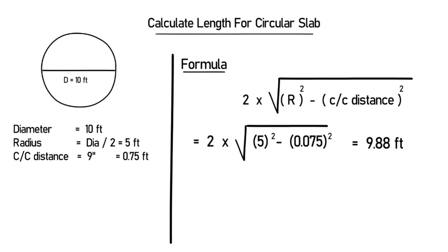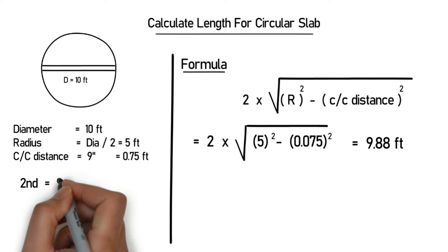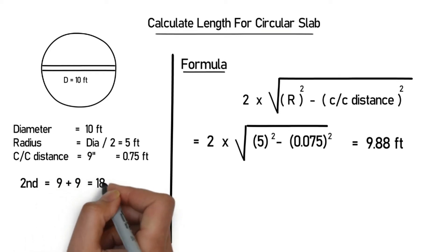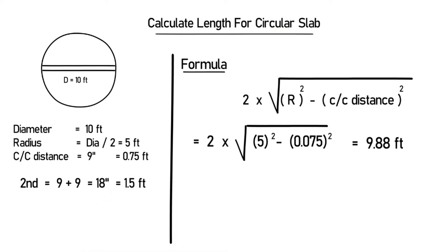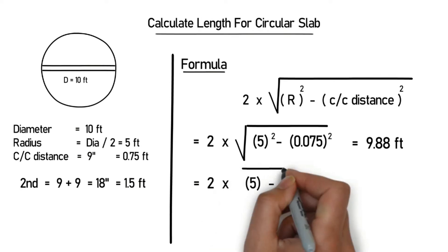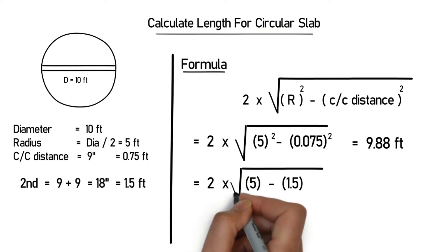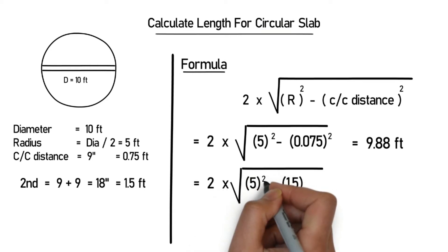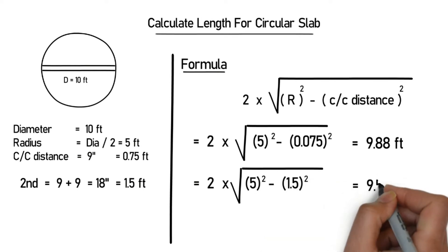For the second bar, we first find the center to center distance, which is 9 + 9 = 18 inches. Converting to feet gives 1.5 feet. Putting the second center to center distance into the same formula: 2 × √(5² − 1.5²). After calculating, you will get 9.53 feet.